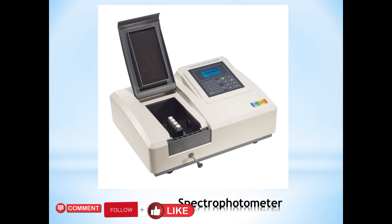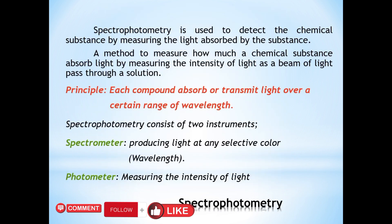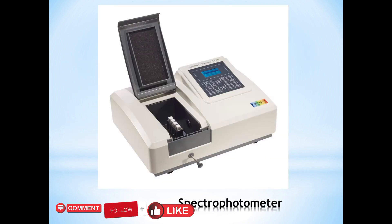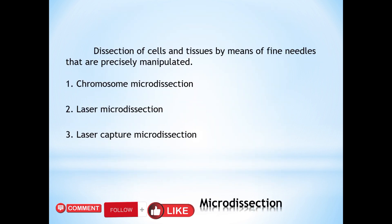The apparatus which carries out these processes is known as a spectrophotometer, which is basically composed of a photometer and a spectrometer. Another technique used in cell biology is micro dissection.